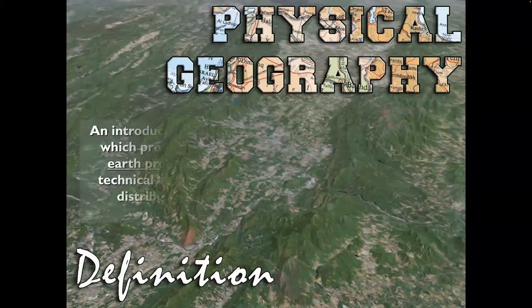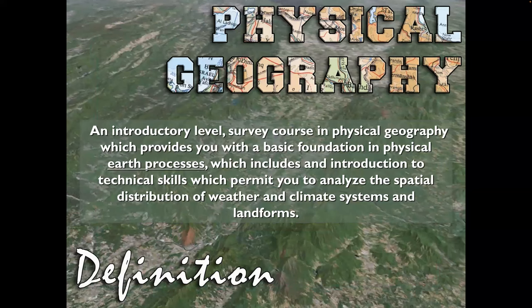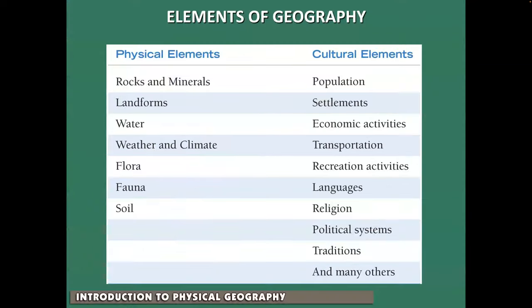Physical geography, think of it as an introductory level course. It examines a whole bunch of factors and processes but doesn't do so in a very deep way because there's only one semester. We're going to focus on things like spatial distribution of weather, climate, systems, and landforms. The cultural elements — population, settlement, language, religion, political systems — we leave aside. We focus primarily on landforms, water, weather and climate, soils, rocks and minerals: the natural aspect of planet Earth.